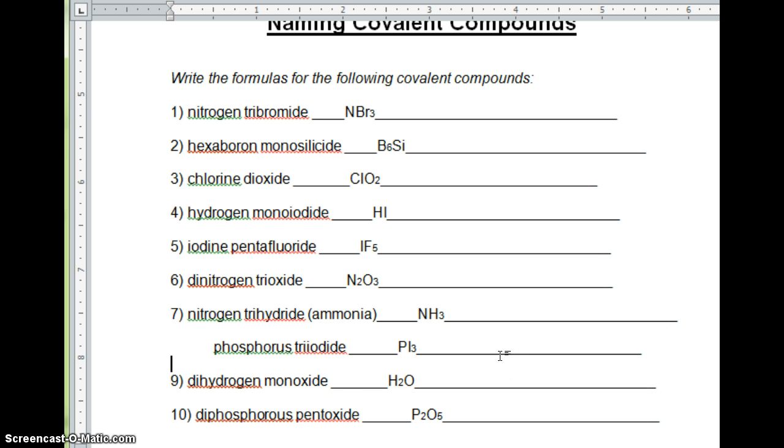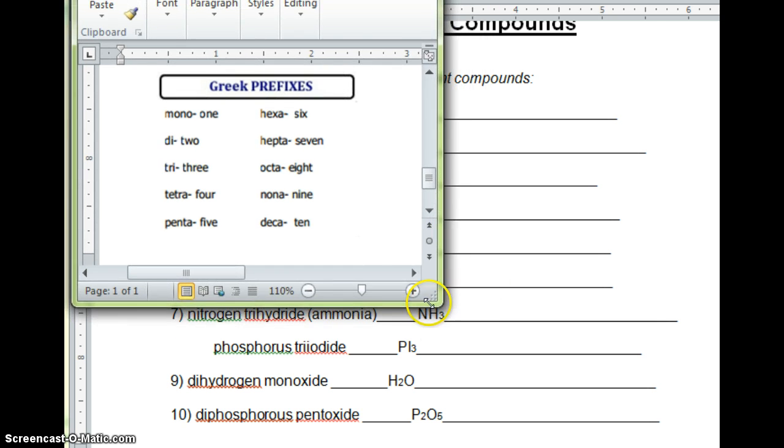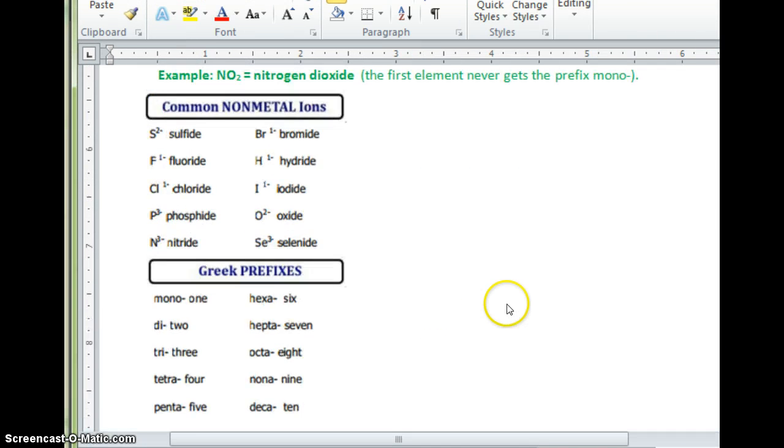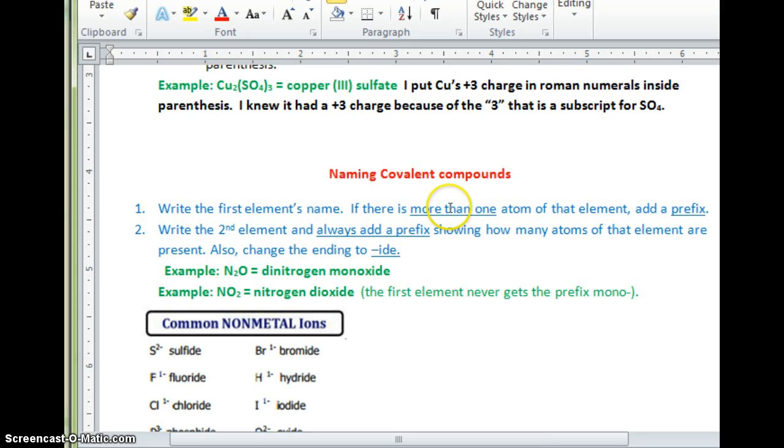That's it. Seriously, this lesson is just a lot of practice. A little bit different naming rules for covalent compounds. And again, use your cheat sheet. The big thing to remember is if there's more than one in the first element, then add the prefix. The second element always gets a prefix and always change your ending to -ide. That's it. Come see me when you need help.